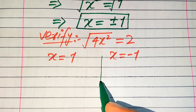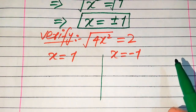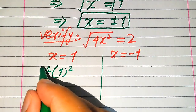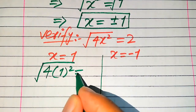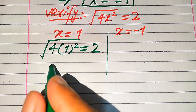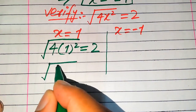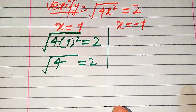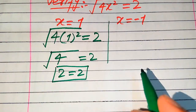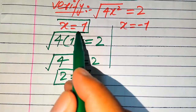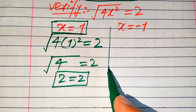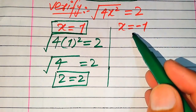When we substitute the positive root into the left hand side of the given equation it becomes the square root of 4 times 1 squared equals 2. We know that 1 squared equals 1, so we get the square root of 4 equals 2, and we know the square root of 4 is 2, so 2 equals 2. This shows that x equals 1 satisfies our given equation, so it is one solution.